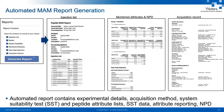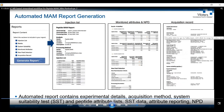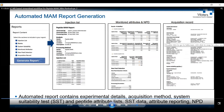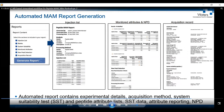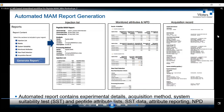The final step of the peptide MAM streamlined workflow method is generation of the MAM report. This is an automated process with a template provided in the software, giving the user flexibility to accept or reject certain sections. The template can report system suitability results, peptide attribute monitoring test results, and new peak detection results.